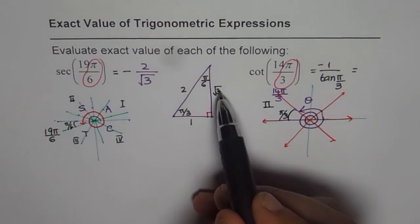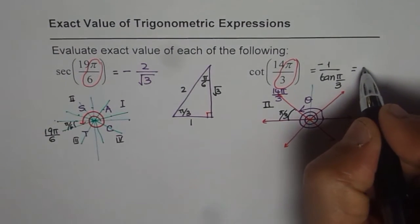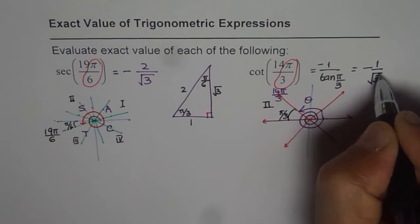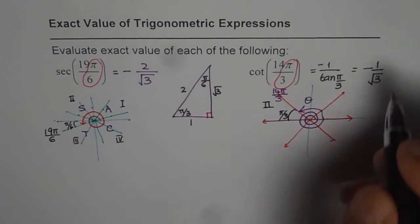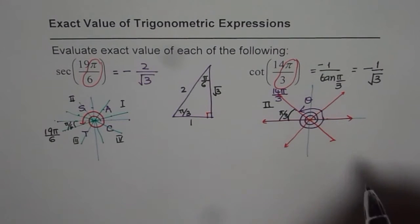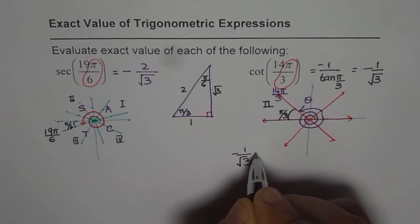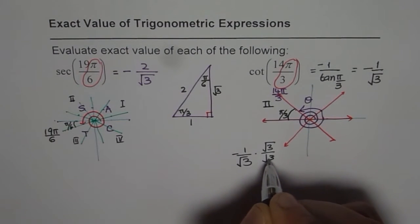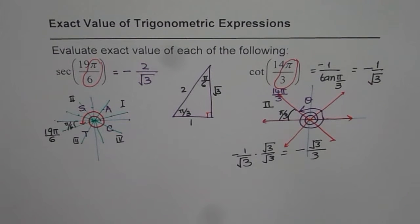Cotangent, tan is opposite over adjacent. Cotangent will be adjacent over opposite. So it is negative 1 over square root 3. So that is our answer. At times, what we do is we rationalize it. So we have minus 1 over square root 3. Rationalization means multiply by square root 3 and divide by square root 3. So we get negative square root 3 over 3. So this is another way of writing the same answer.